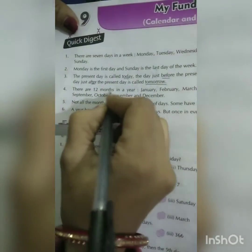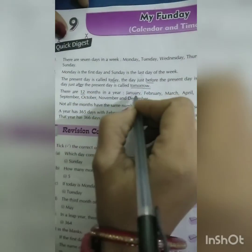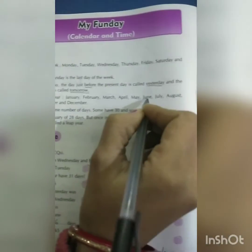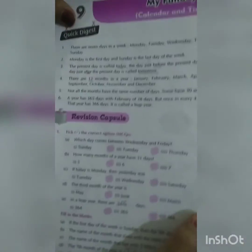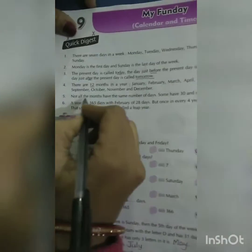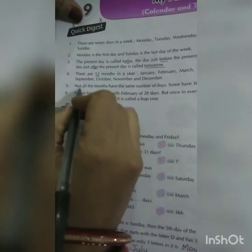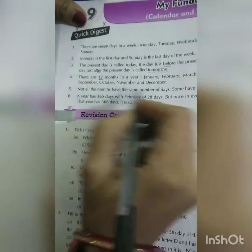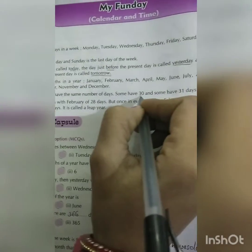There are twelve months in a year: January, February, March, April, May, June, July, August, September, October, November, and December. Not all months have the same number of days.